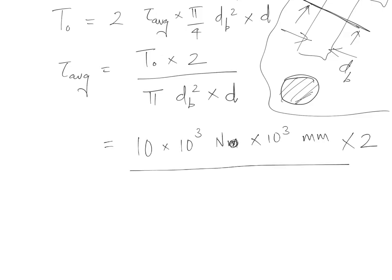I forgot the 2, so this is 10 × 10³ N·mm × 2, then π is there, and diameter of the bolt is 20 millimeter squared.